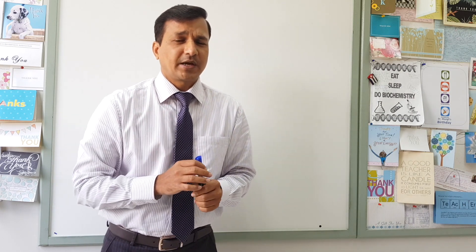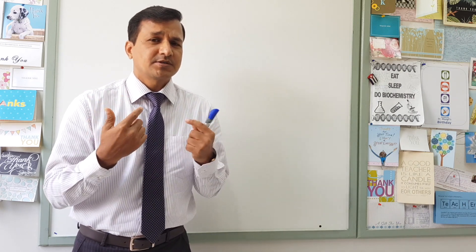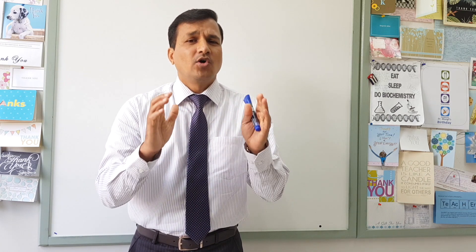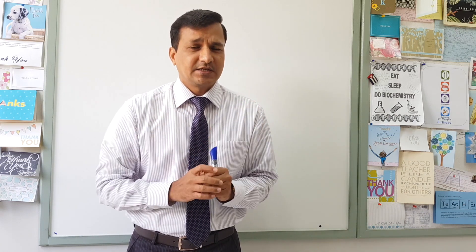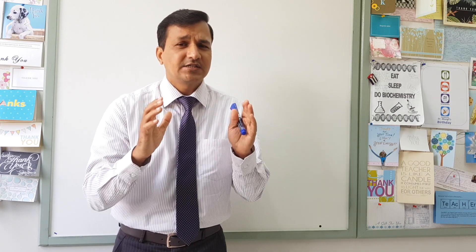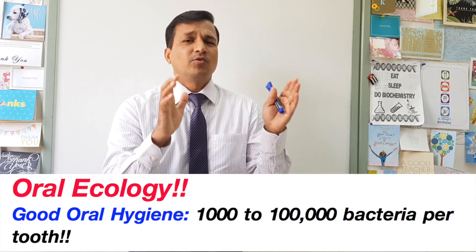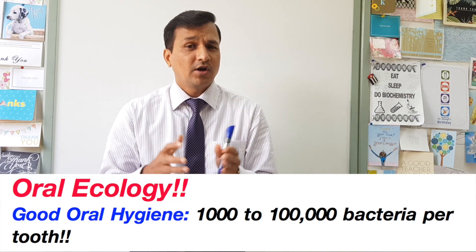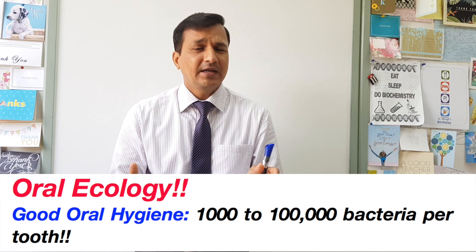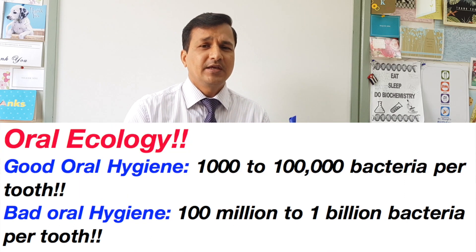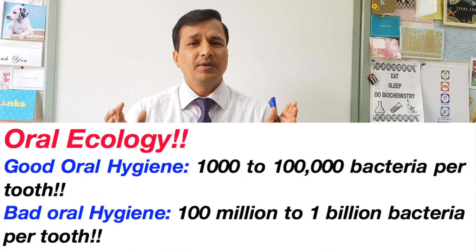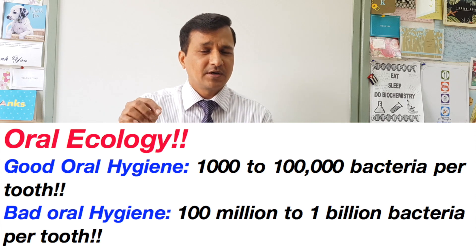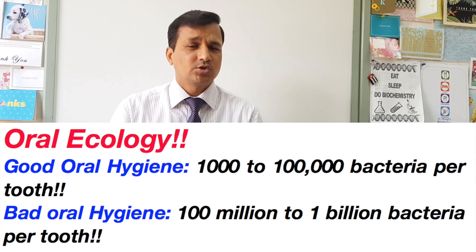The number of bacteria present on each tooth depends on your oral hygiene. If the oral hygiene is good, it can vary from 1,000 to 100,000 bacteria per tooth. If the oral hygiene is bad, it can be 100 million to 1 billion bacteria for each tooth.